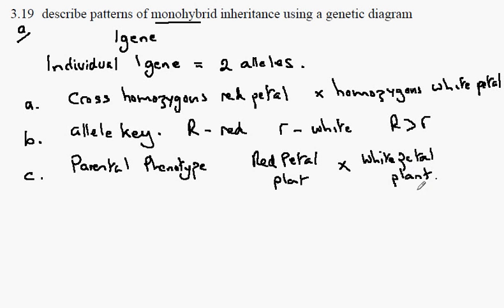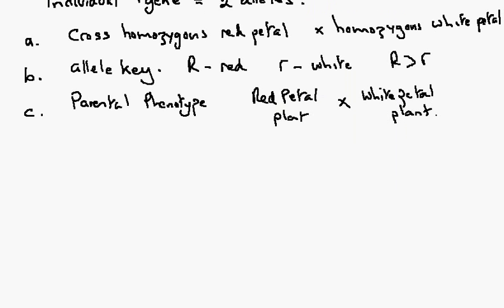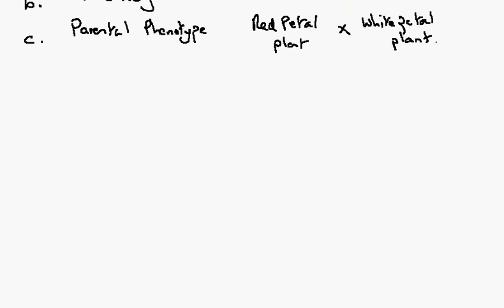Now, you might like to think about how you would actually do this in terms of the transfer of pollen grains from the red petal plant to the white petal plant stigma, the fertilization which would occur, and then the collection of seeds and the germination of seeds to carry this out in reality. It would actually take quite a long time. So, we've written down the parental phenotypes.